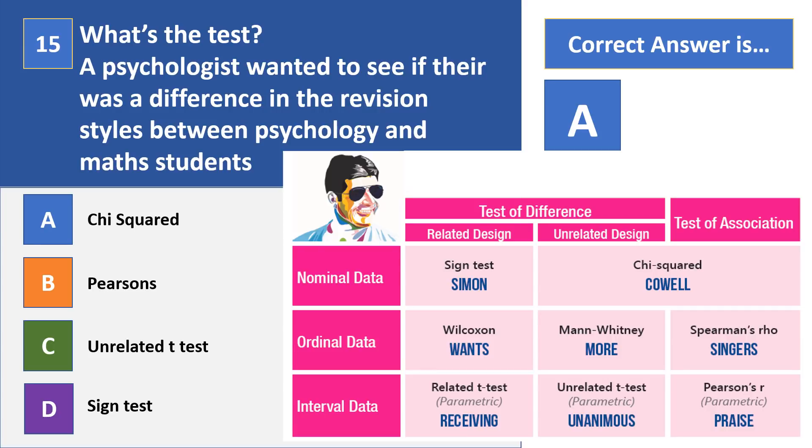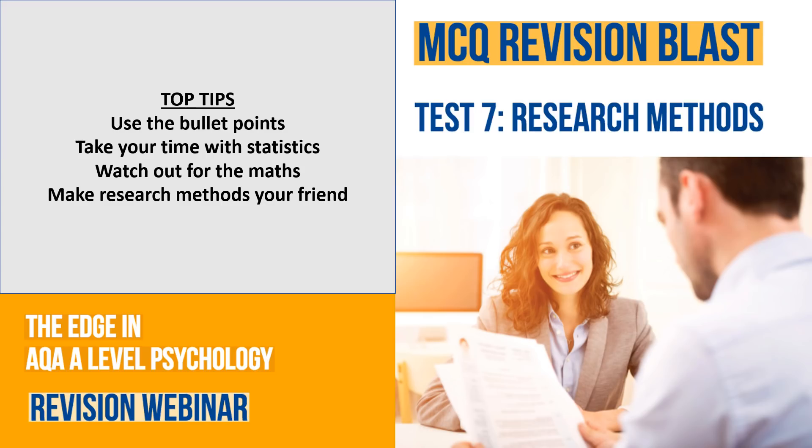Okay, a few things just to finish up. Use the bullet points. This refers to those longer answer kind of 12-mark 'design your own investigation' type questions. If you're given bullet points to use, use those bullet points to structure your answer. Take time with statistics. It's very, very easy to accidentally think 'oh, that's nominal data' instead of ordinal data and potentially get the test wrong. Watch out for the maths. The maths is worth 10% over the whole of your A-level, so take your time if asked to do a calculation. And finally, make research methods your friend. It's worth the most out of everything on your entire A-level, so really give it the time that it deserves in your revision. Thank you and good luck.